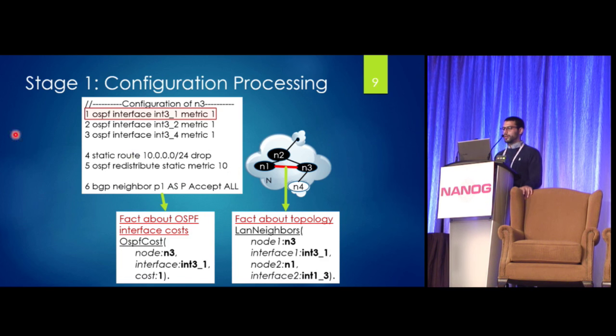So stage one is pretty basic. We parse the configurations. So a line like this first one you see here on N3 would be converted to this fact about OSPF interface costs in our model. So you see the node is N3, the interface is N3-1, which you see from here, and the cost is 1, which you get here. And we get similar information about the topology and convert that to facts that we're able to handle.